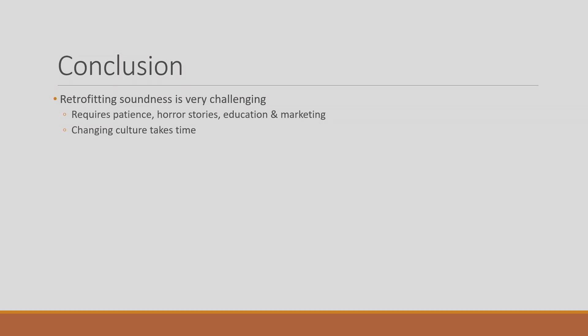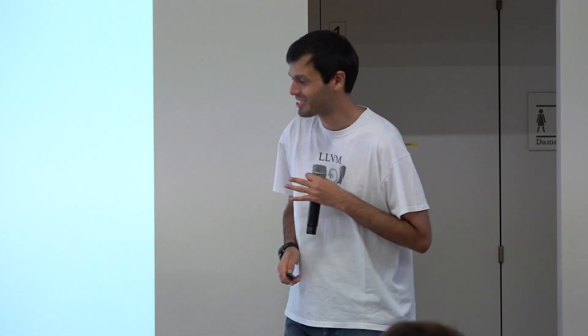To conclude: retrofitting correctness is really hard. It requires a lot of horror stories — my experience has always been this way, like at Microsoft with network verification where we required data centers to burn before we could sell correctness. You need to change culture. It's actually impressive that today I got an email about an LLVM review where someone rejected a patch because it would make building tools like Alive2 harder. That took a decade to get there. If LLVM had been built from the beginning with a validation tool, we'd be in a much better place.